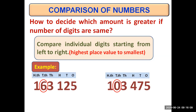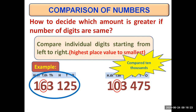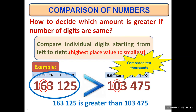So we move towards the ten thousands place. At ten thousands, the first number has six whereas the second number has zero. Six is greater, so the first number will be greater. When we compare ten thousands, we find that the first number is greater. So the symbol will be open towards the first number, and we say that 163125 is greater than 103475.